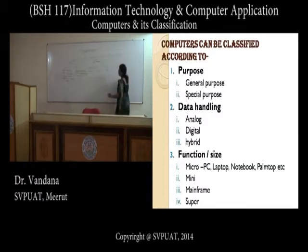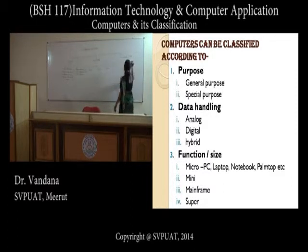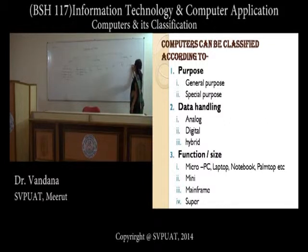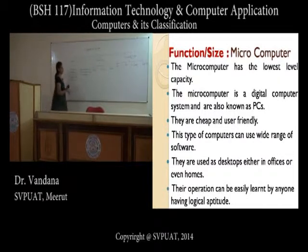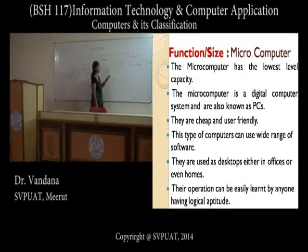Now let's look at the most important classification — according to functionality, or size. Computers can be put into four groups: microcomputers, minicomputers, mainframe computers, and supercomputers. Microcomputers are the smallest, originally developed for single-user applications, but nowadays they can be networked to share information.